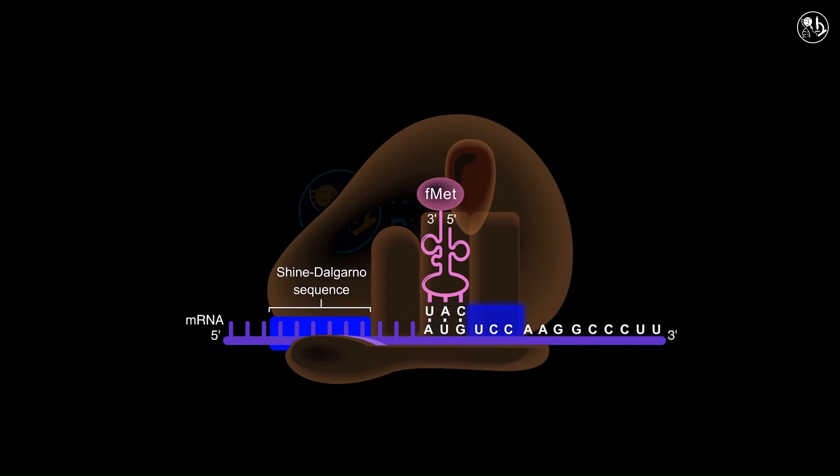The forthcoming codon is positioned in the A site, the codon present is UCC which signifies the amino acid serine.